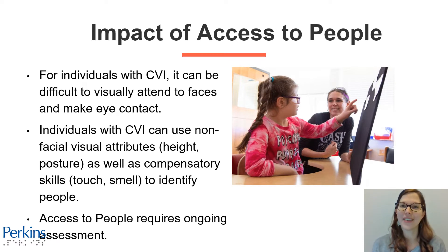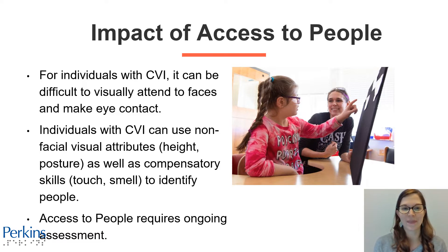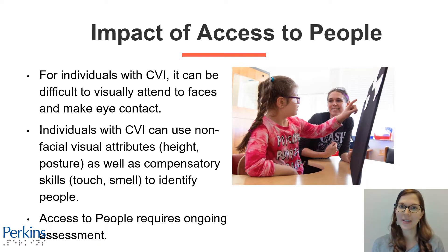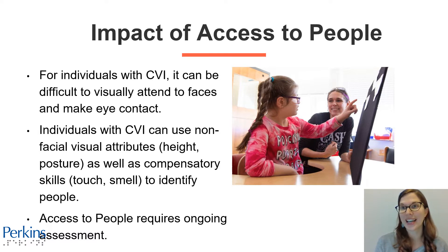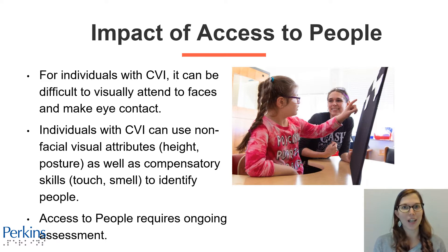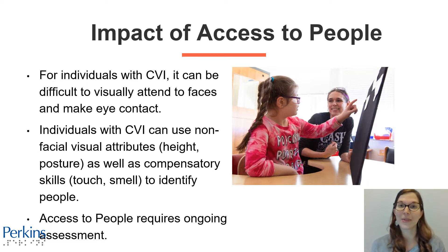What's the impact of access to people? For individuals with CVI, it can be difficult to visually attend to faces and make eye contact. They can use non-facial visual attributes such as someone's height and posture to identify those around them. Then some facial visual attributes such as knowing that someone wears glasses, the color of their hair, the length of their hair, details like that to help them know who's around them. They can also use compensatory cues such as someone's touch, their smell, and being able to recognize footsteps to identify those around them.